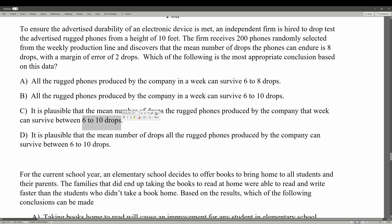Next we have 6 to 10 drops, which is calculated using the margin of error. You subtract 2 from the mean number and add 2, giving a distance of 2 above and below the mean. Choice C says it is plausible that the mean number of drops the rugged phones produced by the company that week can survive is between 6 to 10 drops. Choice D says it is plausible that the mean number of drops all rugged phones produced by the company can survive is between 6 to 10 drops. D is incorrect because we did not test all the phones. The answer is C.